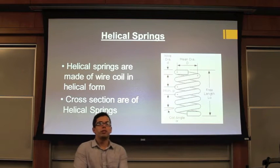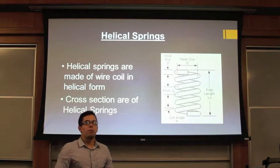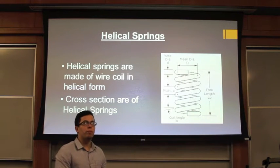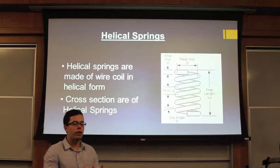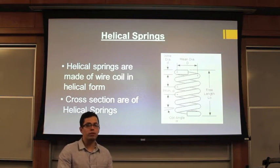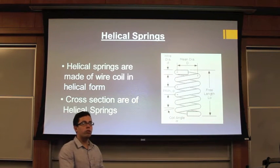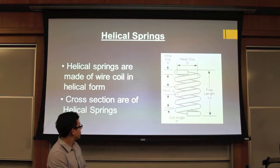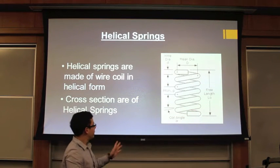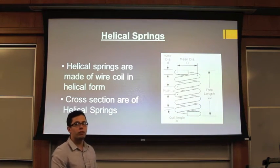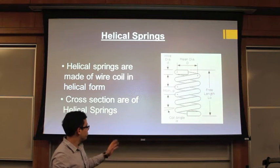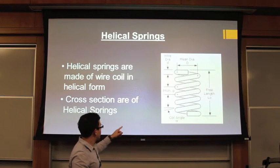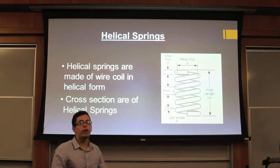I'm going to talk about helical springs. Helical springs are made of a wire coil in helical form. They can have different areas, like circular areas, rectangular, or square area. In order to design helical springs, we should take into account many different factors. One of the most important are the free length, the mean diameter, the wire diameter, the pitch, and the coil angle.